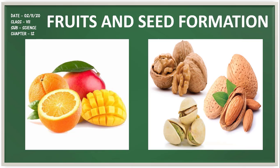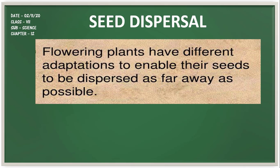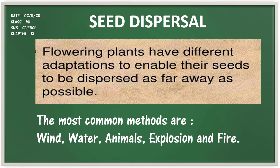Our last topic is seed dispersal. Plants make seeds that grow into new plants, but if seeds just fall under the parent plant they might not get enough sun, water, or nutrients. Since plants cannot move, they have developed methods to disperse their seeds — the most common are wind, water, animals, explosion, and fire. Seed dispersal benefits plants by preventing competition between the plant and its own seedlings for sunlight, water, and minerals, and enables plants to invade new habitats for wider distribution.